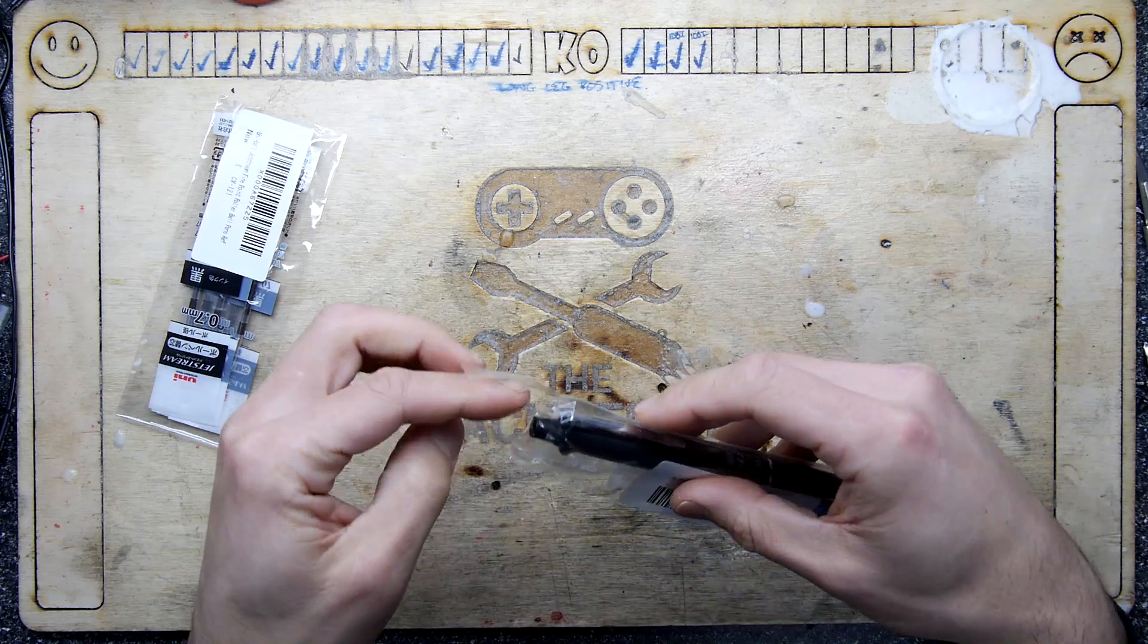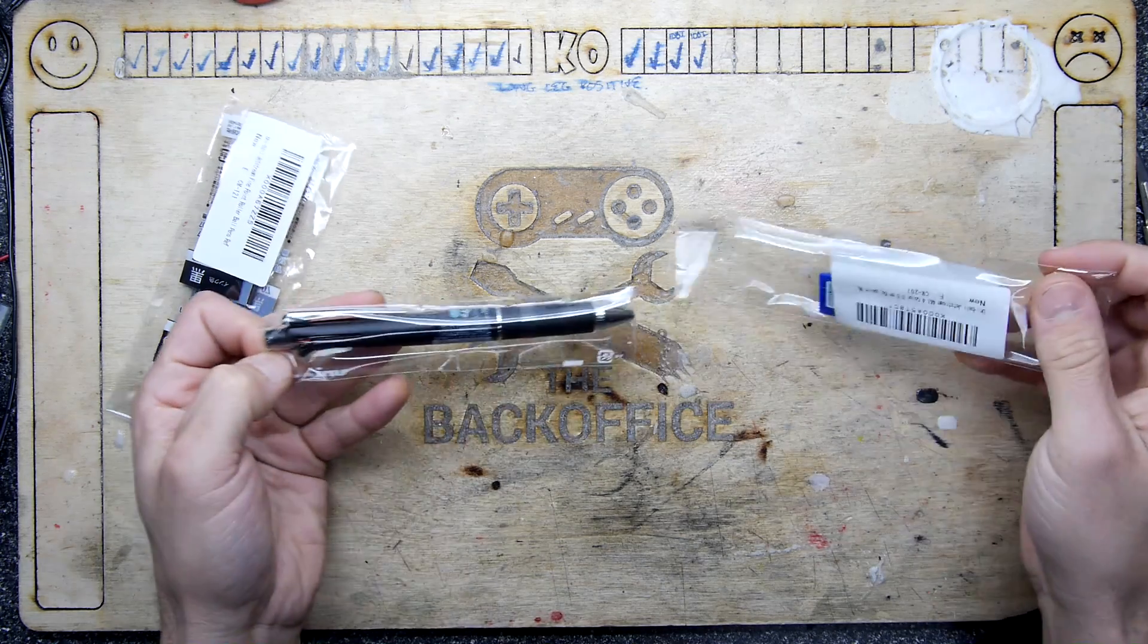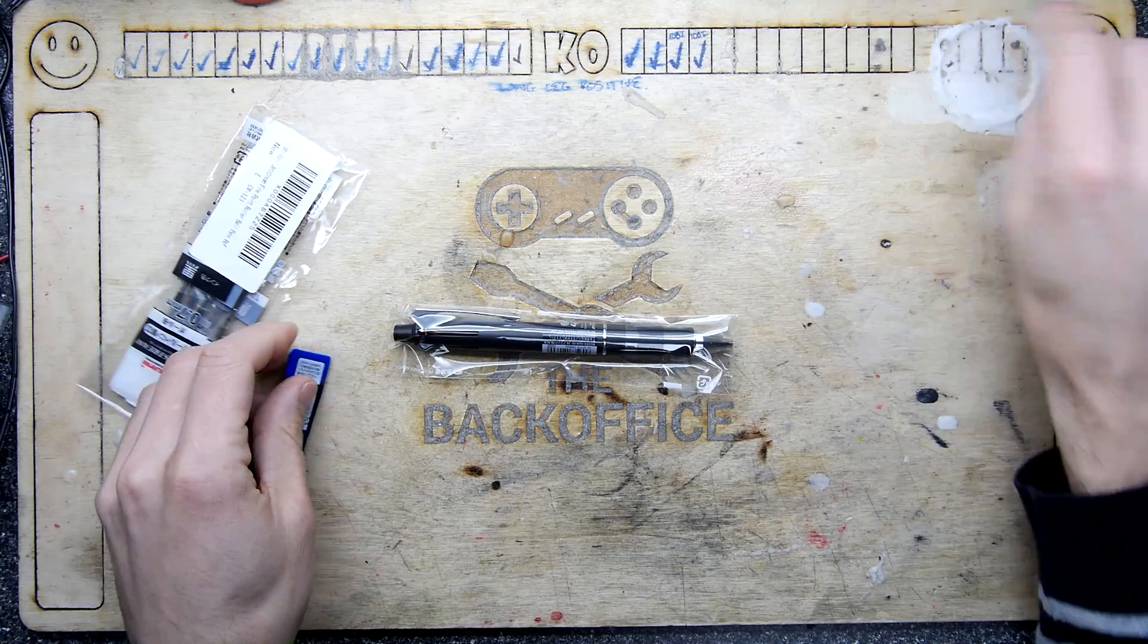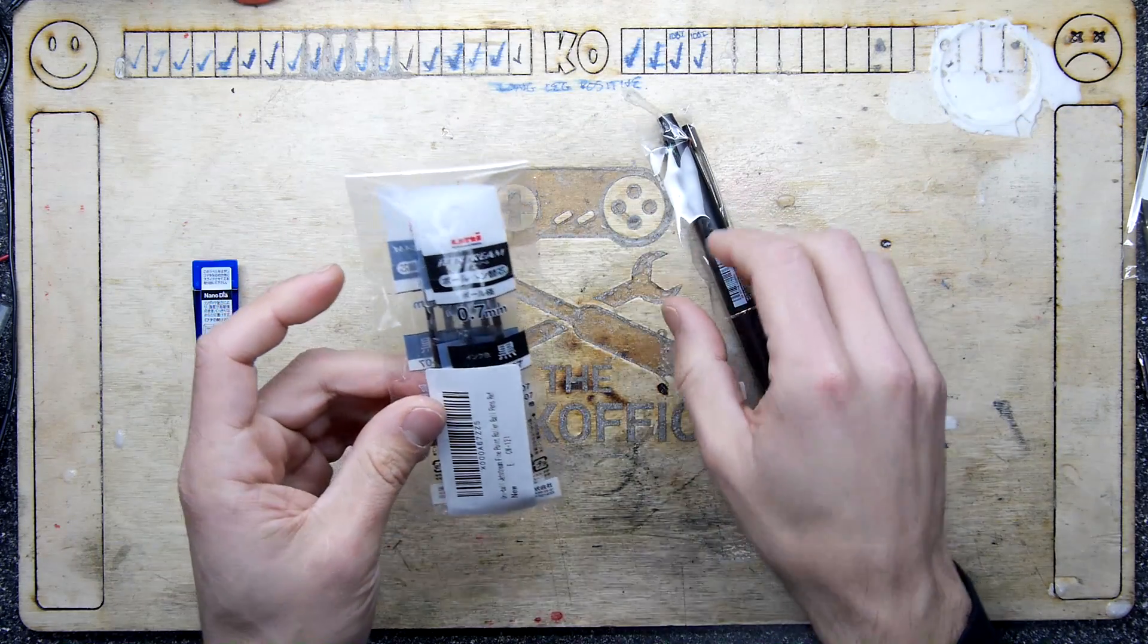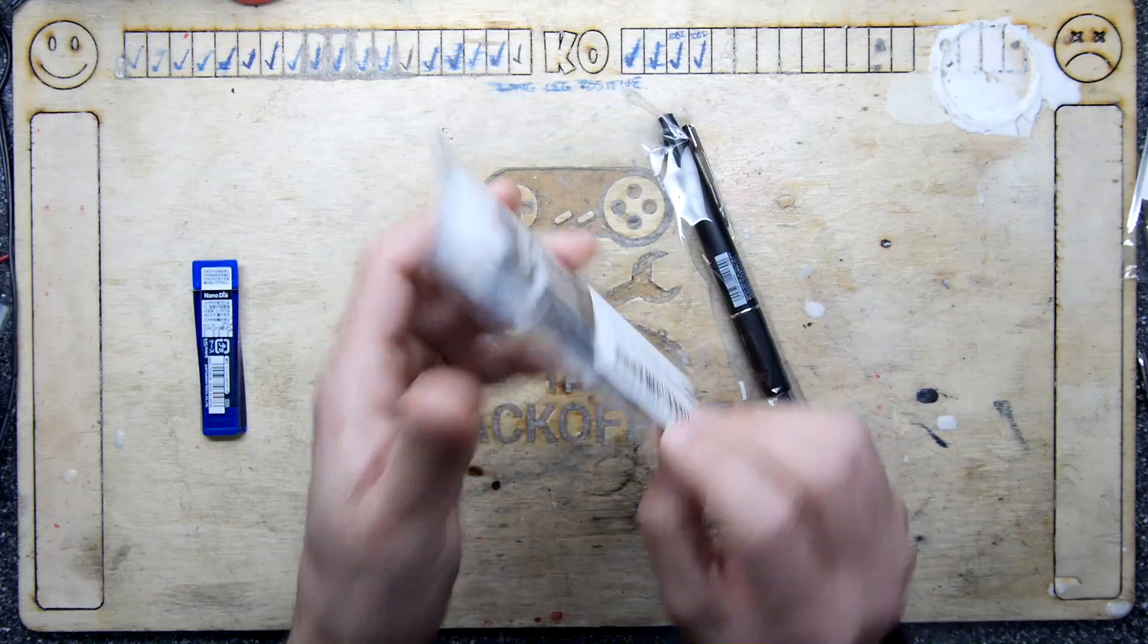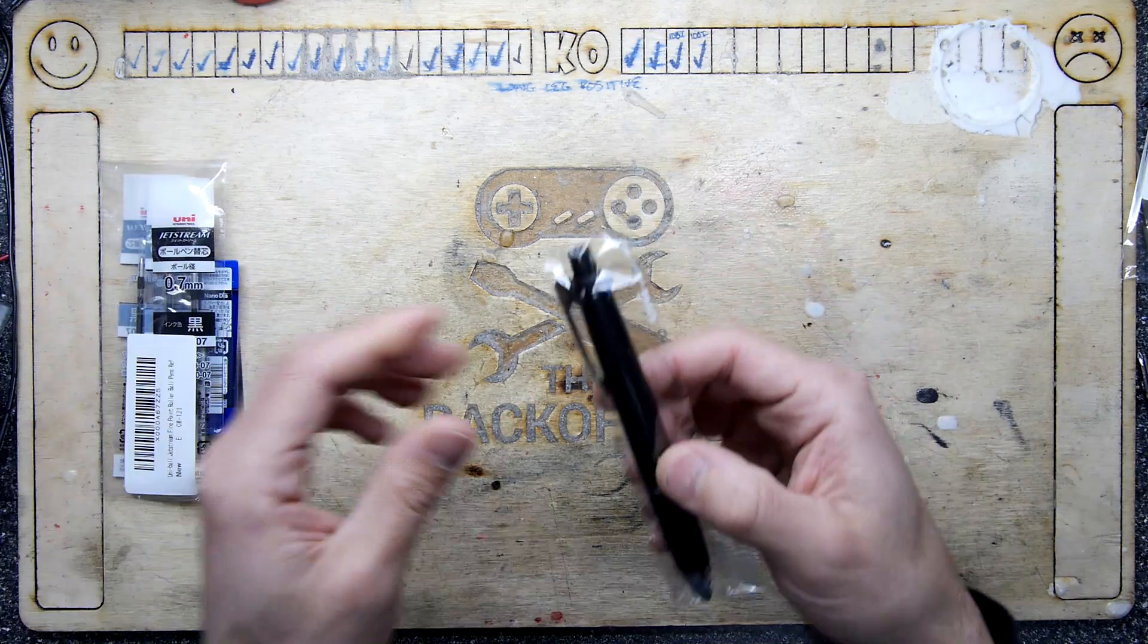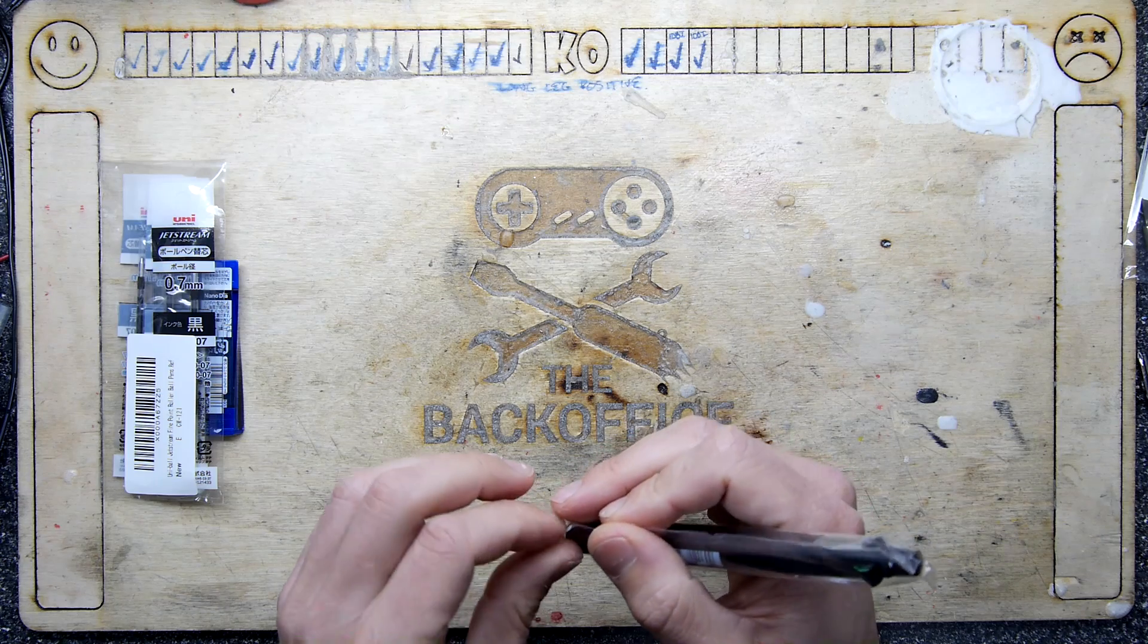But this supposedly is a pen that's made by Mitsubishi of all people. Everybody says you should try it because they say the ink is sublime. It comes in a 0.5 and a 0.7, and I've got the 0.7 refills. This is the Jetstream, so Uni Mitsubishi Pencil, the Jetstream.